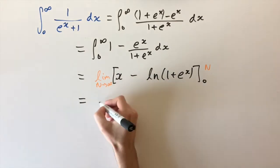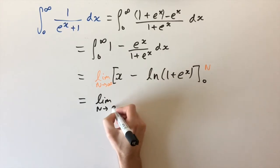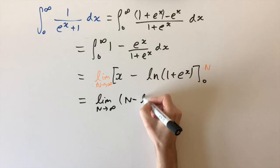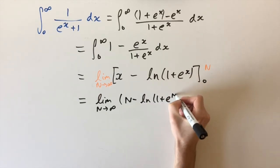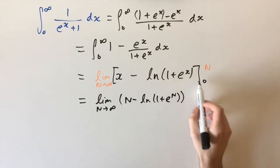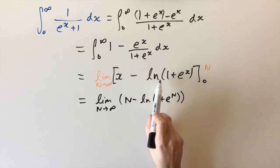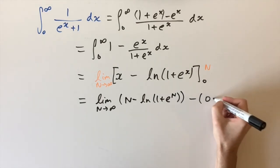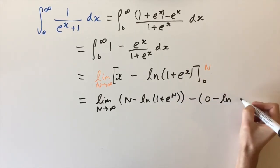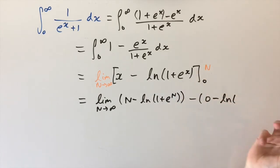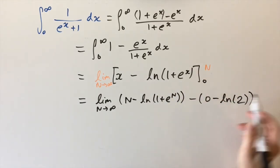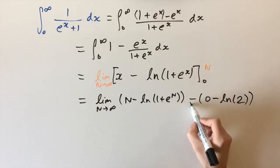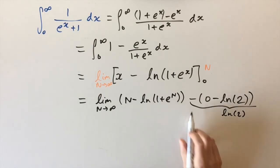We're going to have the limit as n goes to infinity: evaluating at n gives n minus the natural logarithm of 1 plus e to the n. Then evaluating the second term at 0, we have minus 0 minus the natural logarithm of 1 plus e to the 0, which is 1. So we get natural log of 2, since e to the 0 is 1 and 1 plus 1 is 2. The double minus cancels, giving us plus log of 2, which is nice.